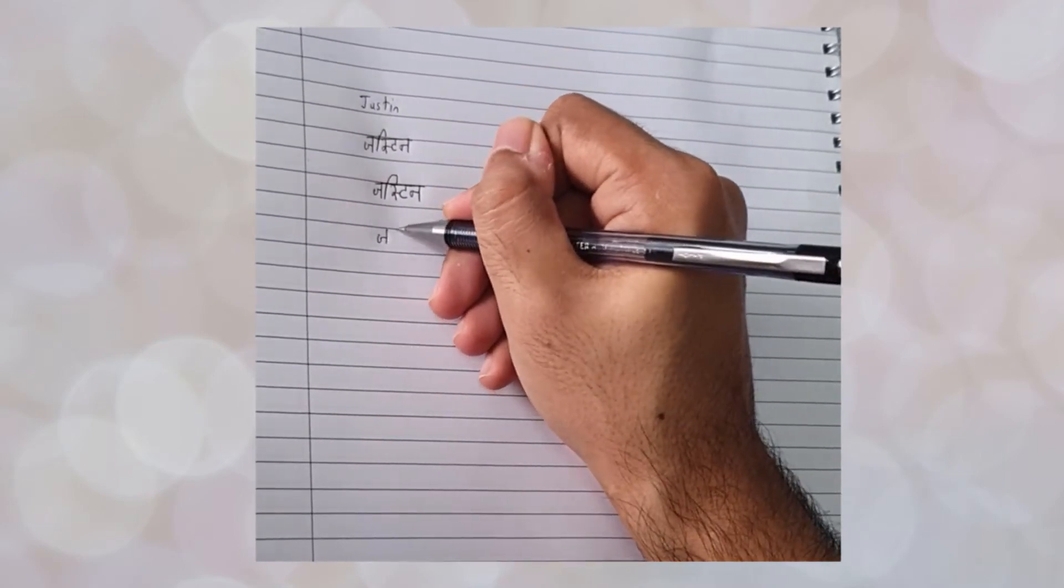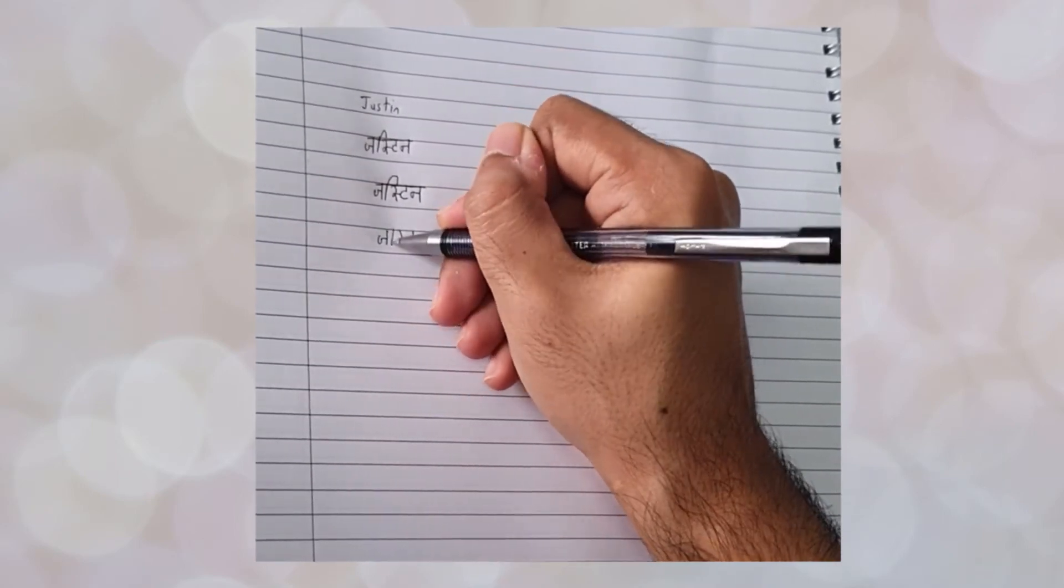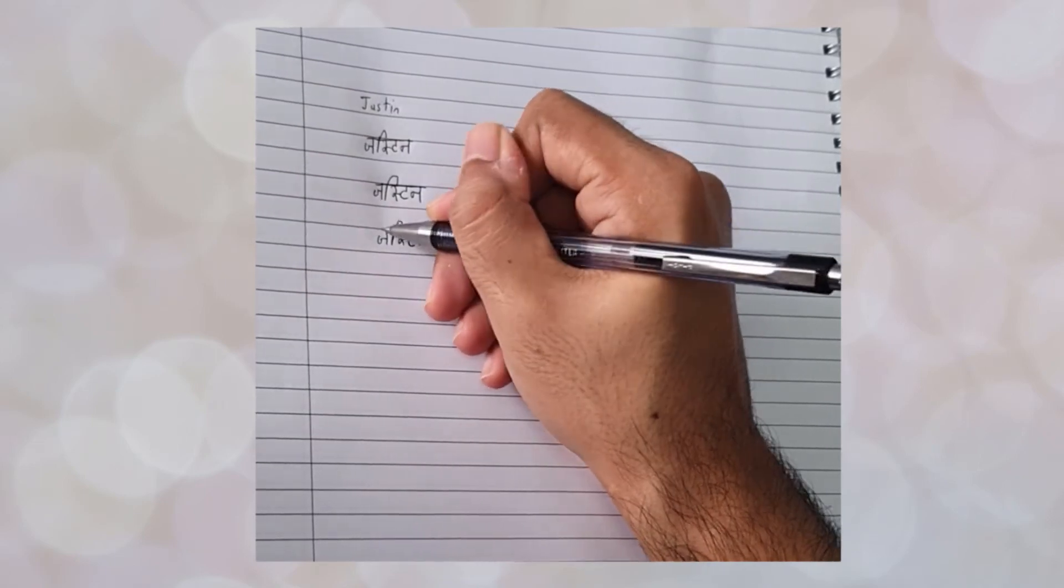One more time: j, half sa, t, i, vowel mark. Justin.